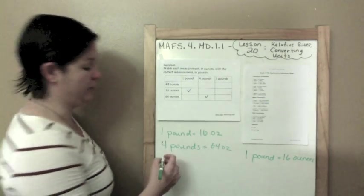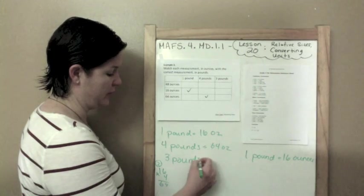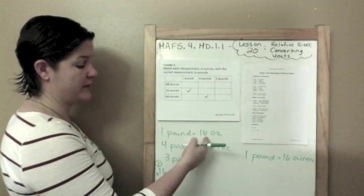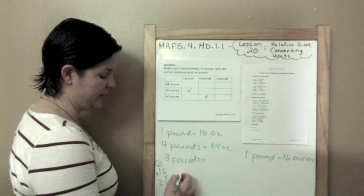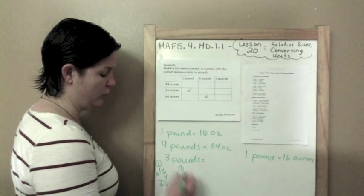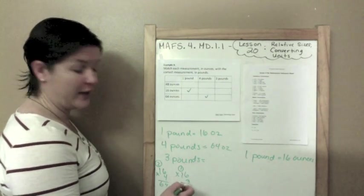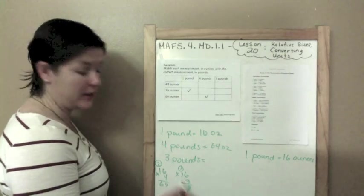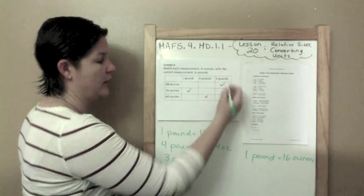And finally, 3 pounds. Alright, so 1 pound equals 16 ounces, and I'm doing 3 of those. I need to multiply 16 times 3. 6 times 3 is 18, it's high up here in the clouds. Nice landing, dude. 1 times, sorry, 3 times 1 is 3, plus 1 is 4, so 48. There we go.